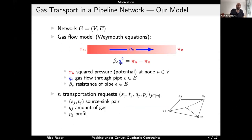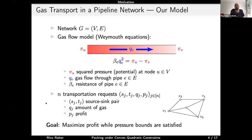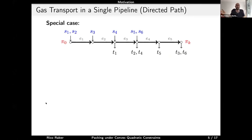We have transportation requests between source-sink pairs: for each day, a source sj, a sink tj, and an amount of gas qj to transport. We decide whether to accept each request and receive profit pj if we do. The optimization goal is to maximize total profit while satisfying pressure bounds. For a single pipeline — a directed graph left to right with sources s1 to s6, sinks t1 to t6 — pressure is highest at the start and lowest at the end.